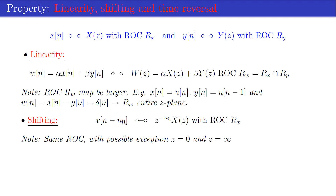Shifting a sequence — delaying or advancing — multiplies the z-transform by a power of z. Because shifting a sequence does not affect its absolute summability, shifting does not change the region of convergence. Therefore, the z-transform of x[n] and x[n - n₀] have the same region of convergence, with the possible exceptions of adding or deleting the points z = 0 or z = ∞.